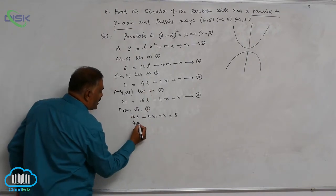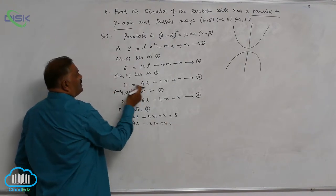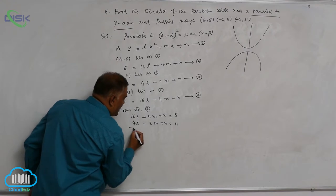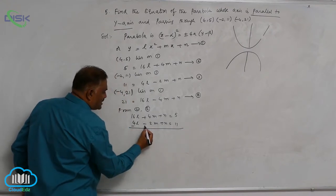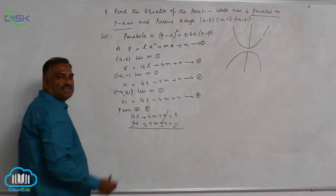Then comes 4l minus 2m plus n is equal to 11. Take subtraction, n gets cancelled here.